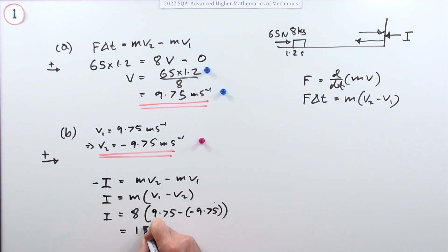Multiplying it out gives you 156. The impulse of the wall on the object is 156 newton seconds. It didn't seem to require units for the answer here, it just says 156, but best to put them in.